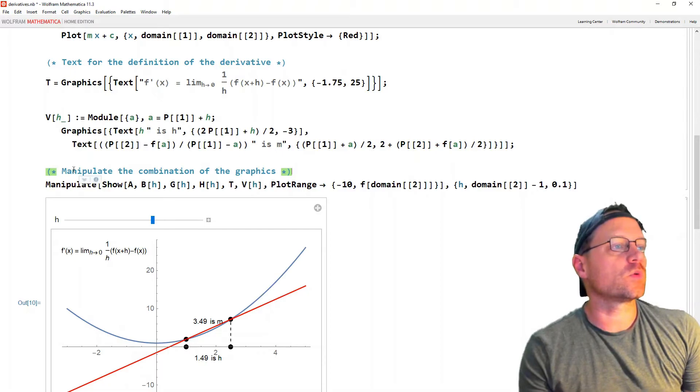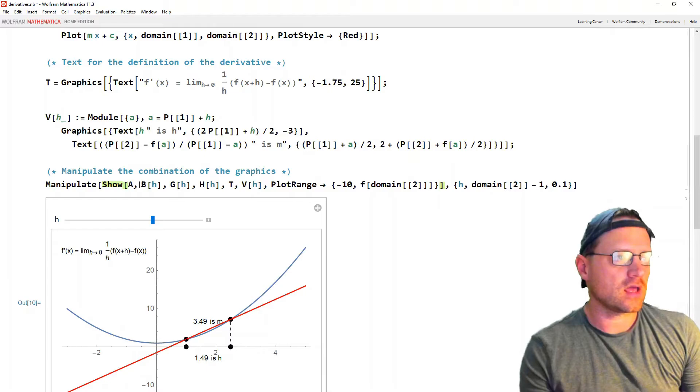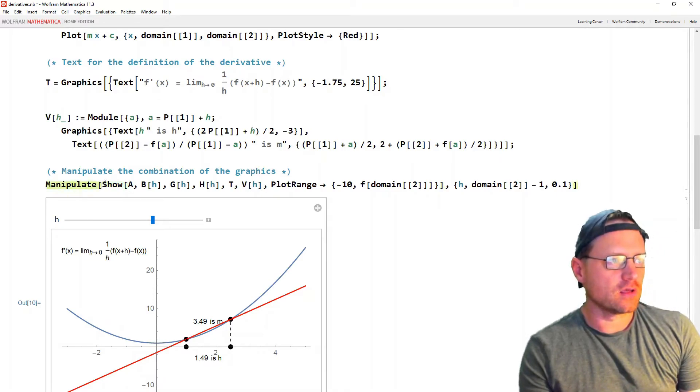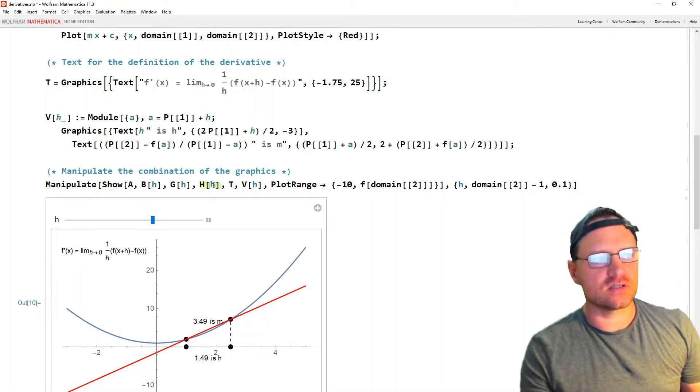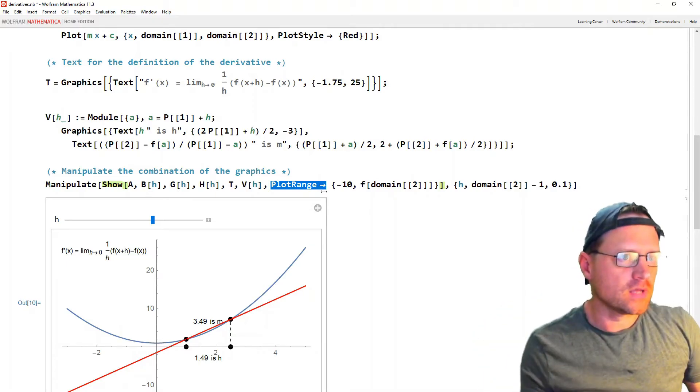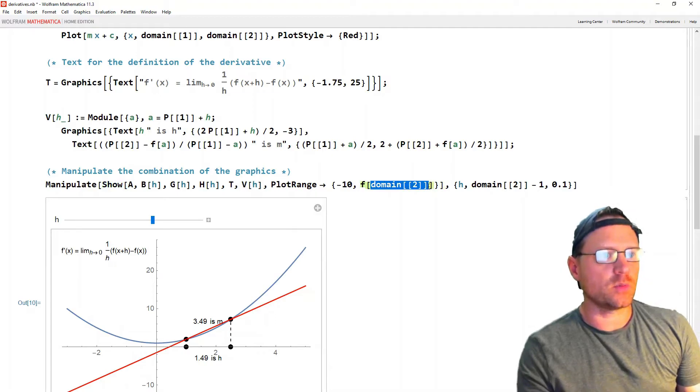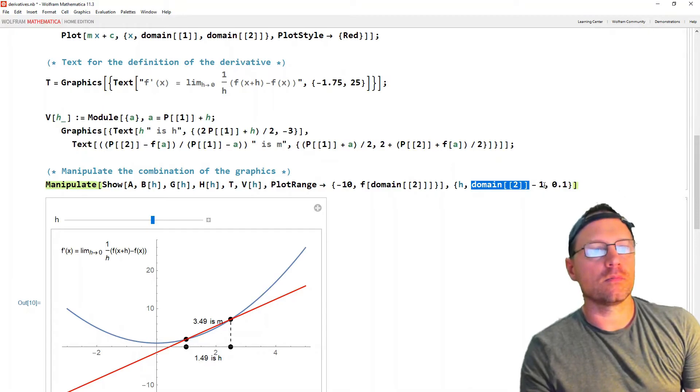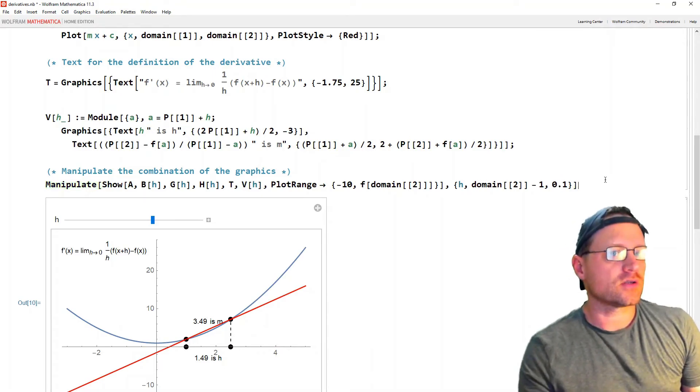All right, and now finally we want to use the manipulate command, but what I'm doing is I'm putting in the body of this, I'm putting show, so I've collected all of those graphics, a, b, g, h, t, and v, that I've built as functions above. I'm showing all of those together, but it's getting manipulated in terms of h. So as h decreases, that's why we need functions here, functions of h, because we want to decrease this as a function of h. But the plot range I need to fix, otherwise it will change accordingly. So I need to fix the plot range to go from minus 10 on the y-axis to f of the second coordinate of the domain. And then h ranges from the second coordinate of the domain, minus 1, and down to 0.1, because if I make it 0, then I get some kind of error in the plot, which I don't want. So I go almost there.